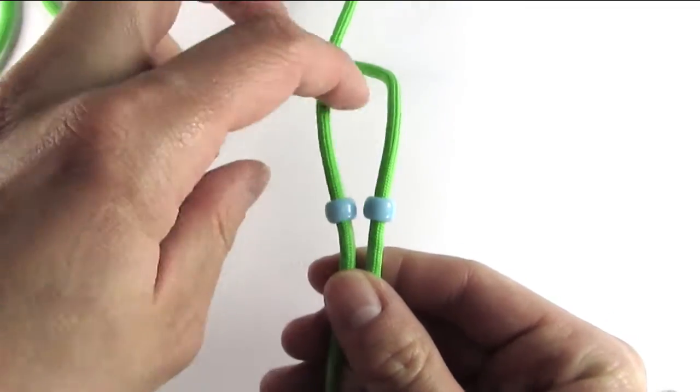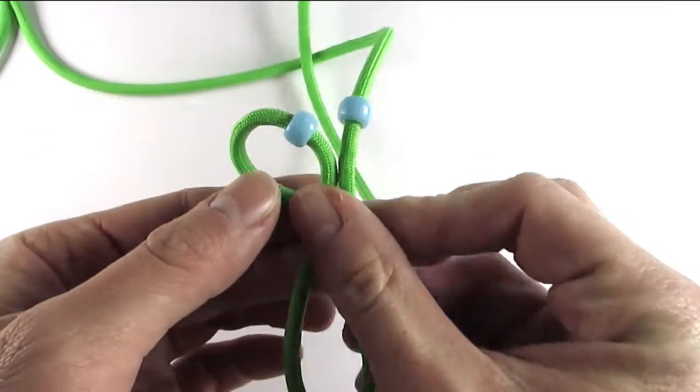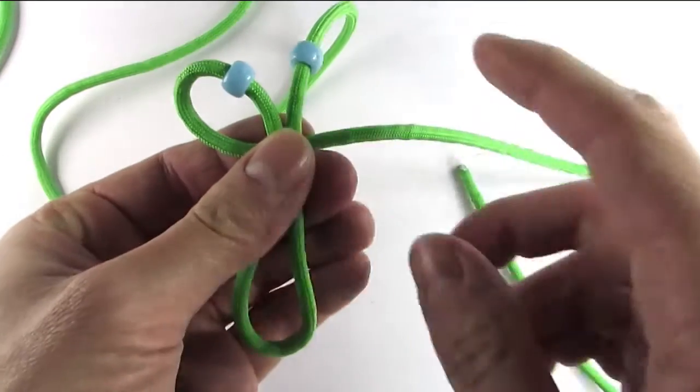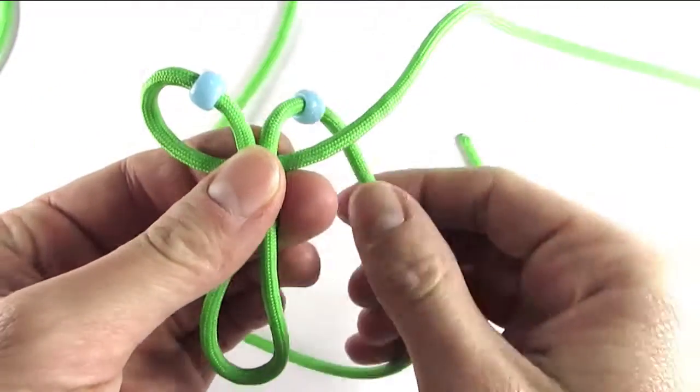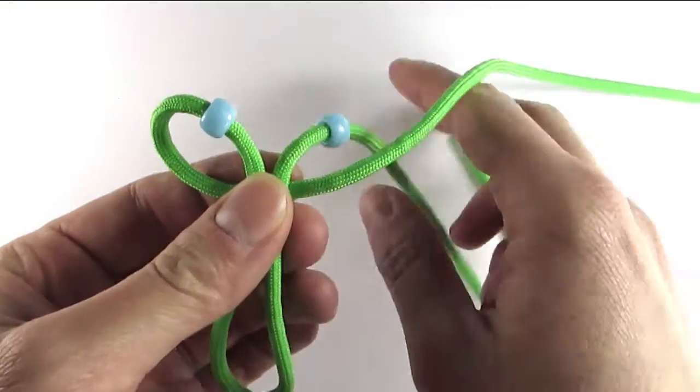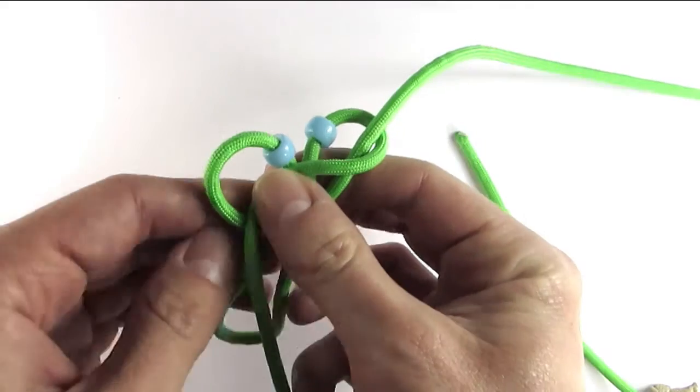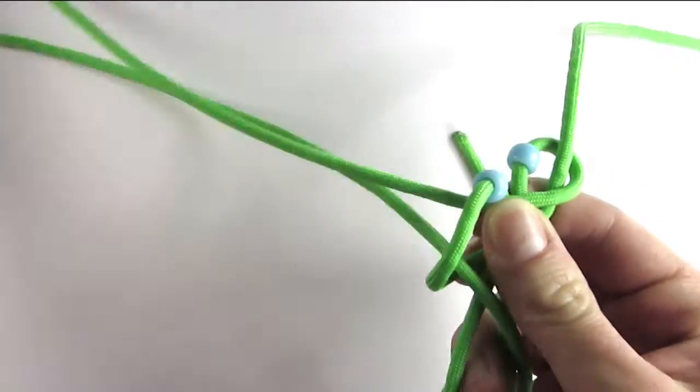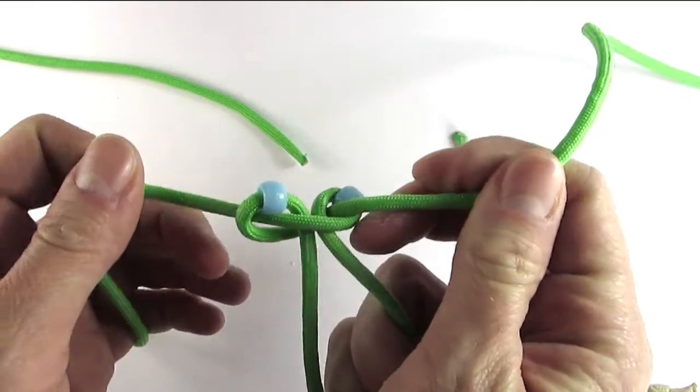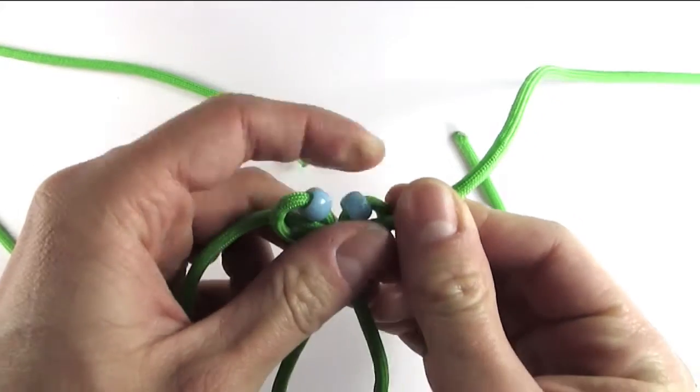I will now start tying a cobra knot, the first one to the left. And after you tighten this one up a bit, it doesn't have to be super tight.